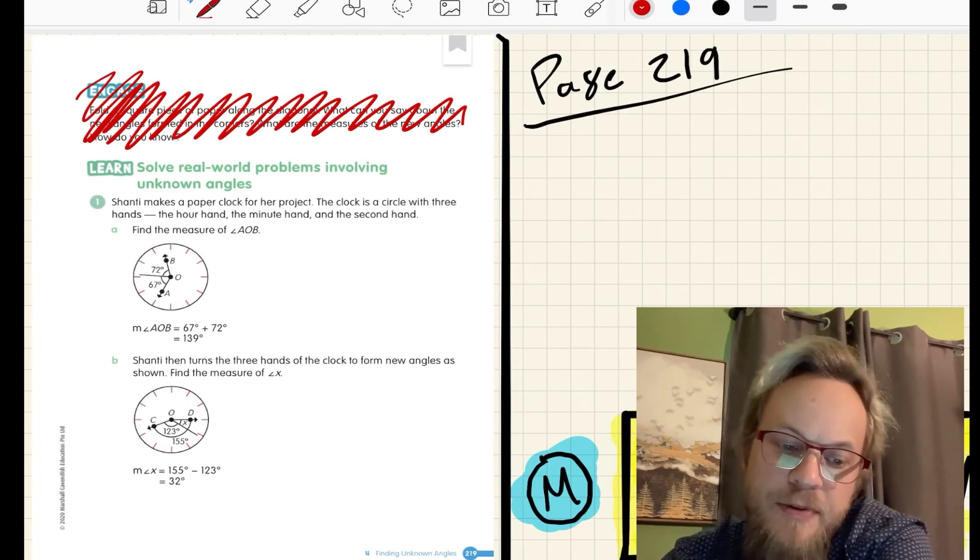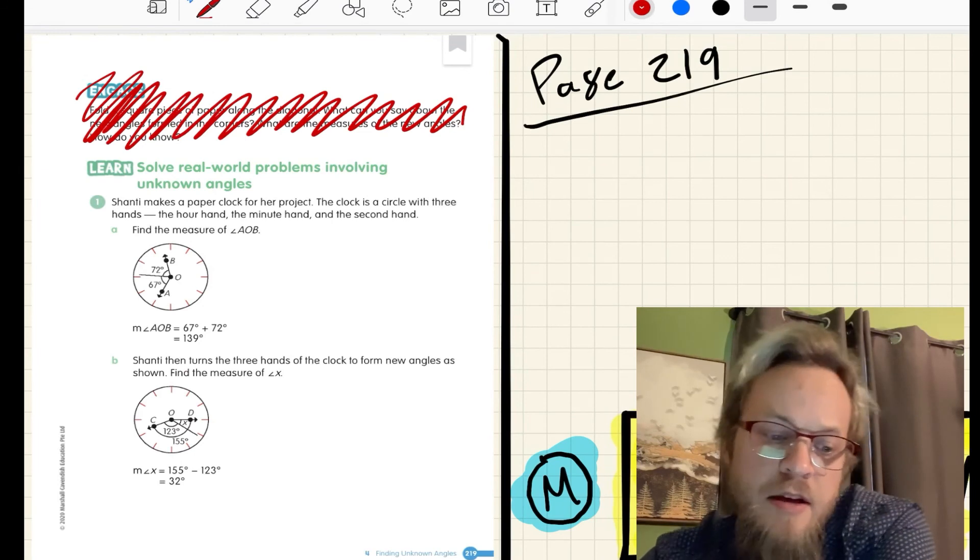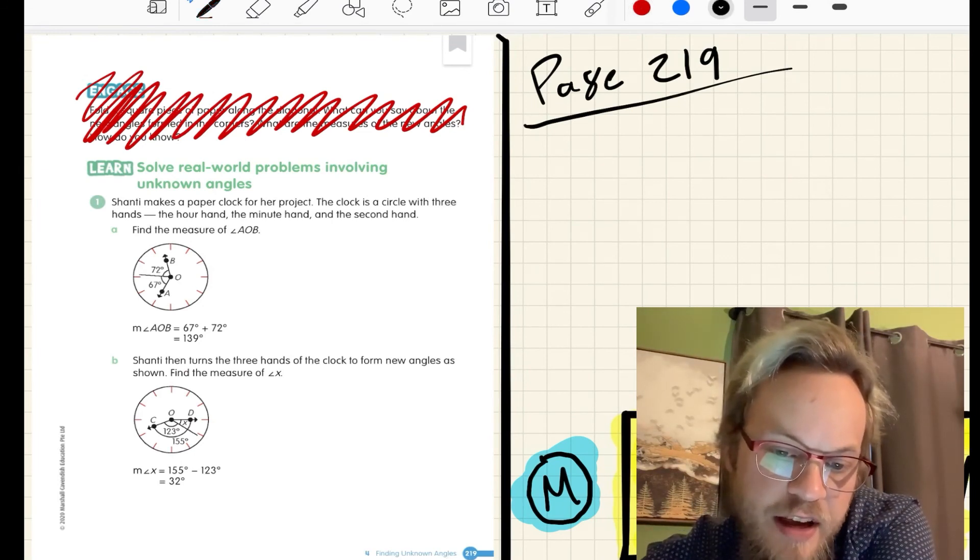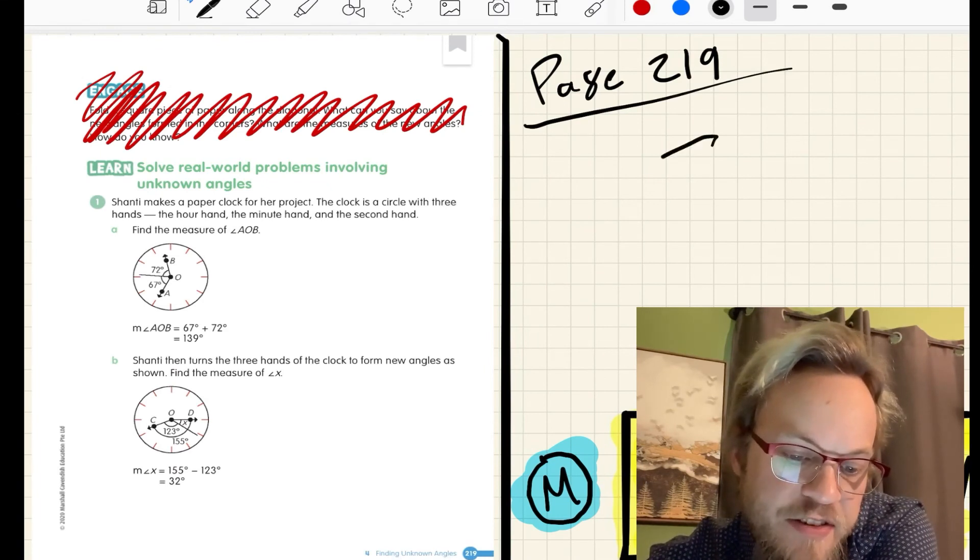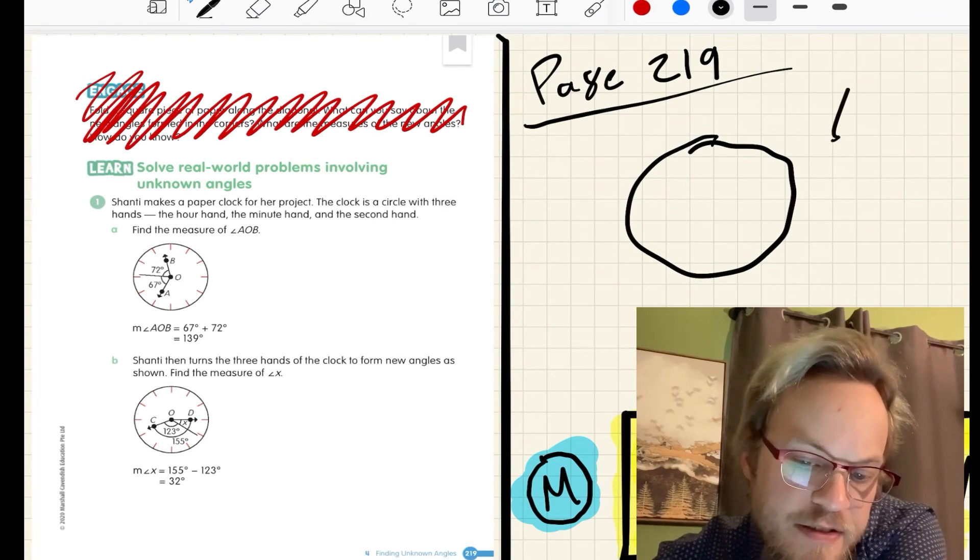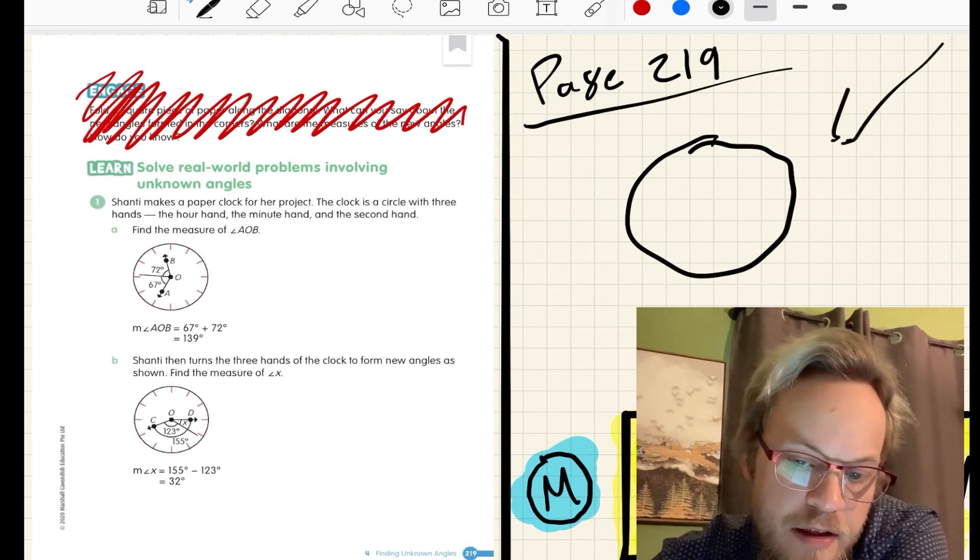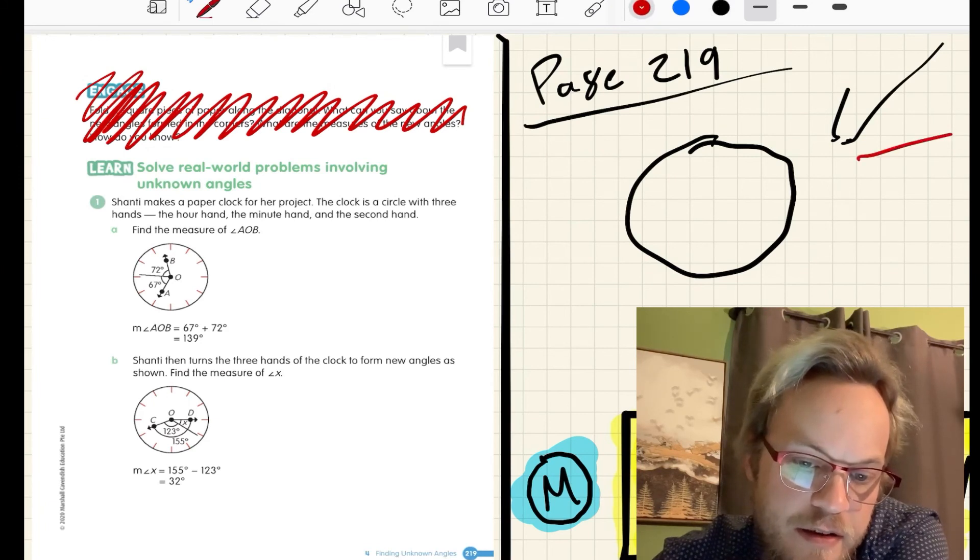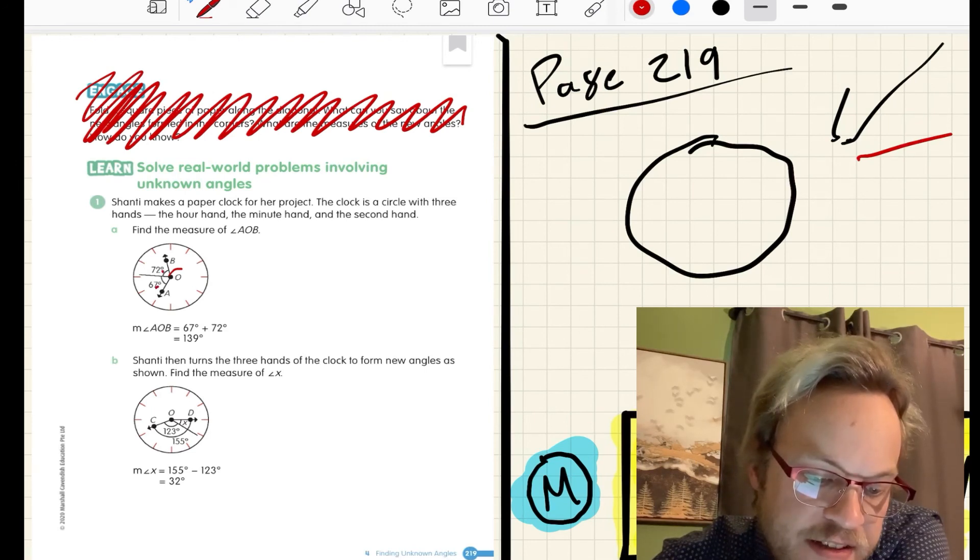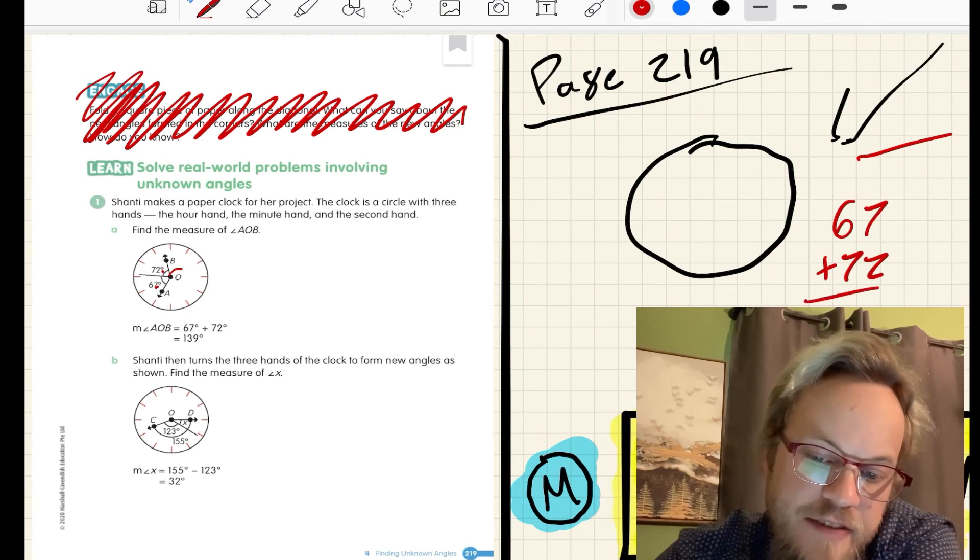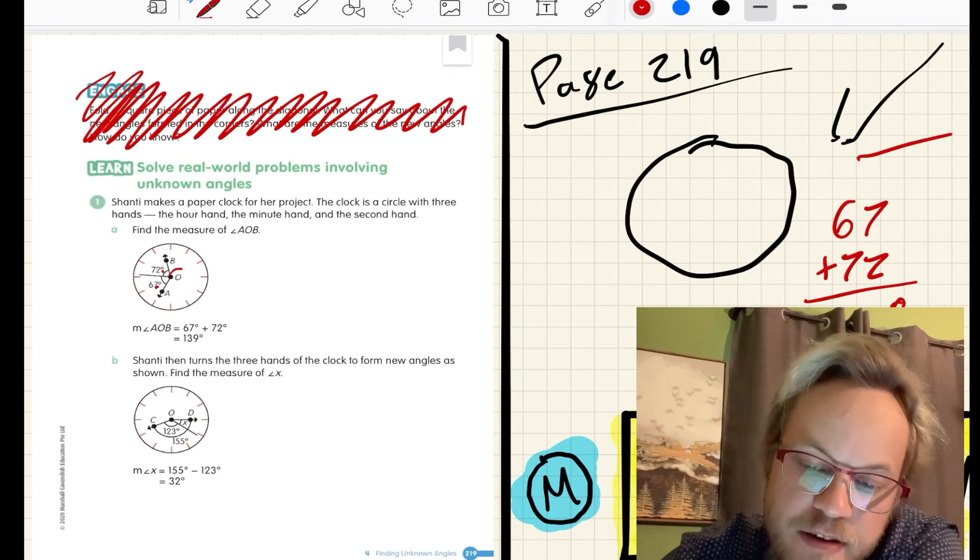A few more examples. These are our word problems. Learn page 219. We have Shanti. She's making a paper clock for her project. The clock is a circle with three hands: the hour hand, the minute hand, and the second hand. Find the measure of angle AOB. AOB would be the 67 plus 72, which gives us a total of 139 degrees.